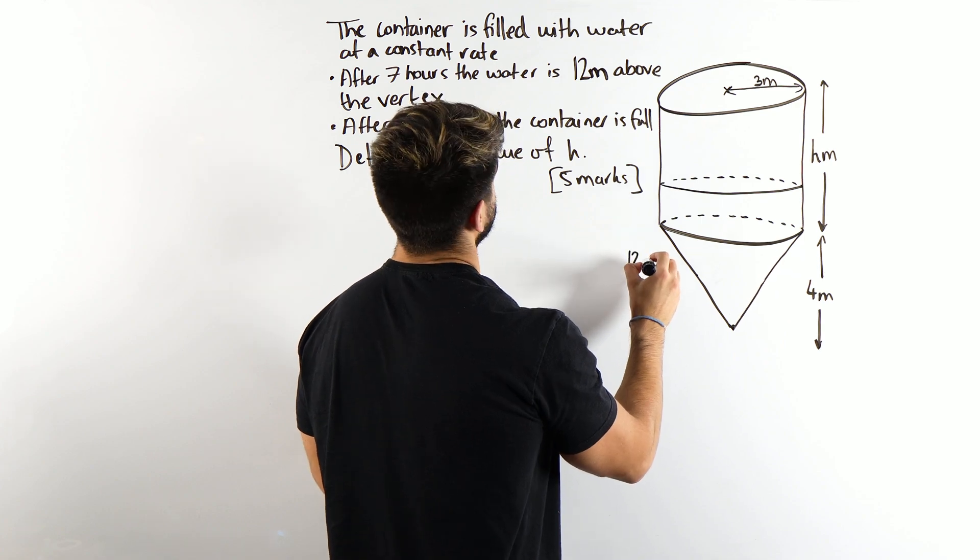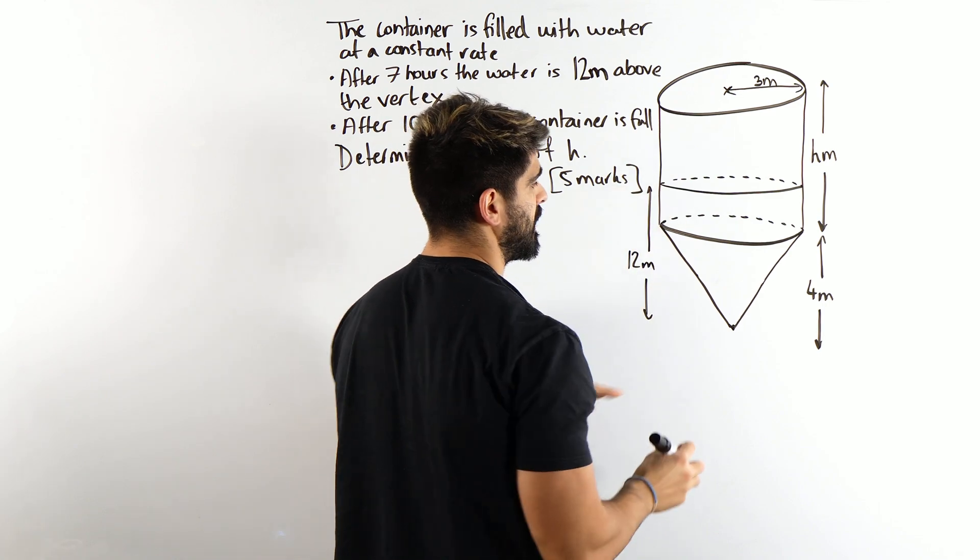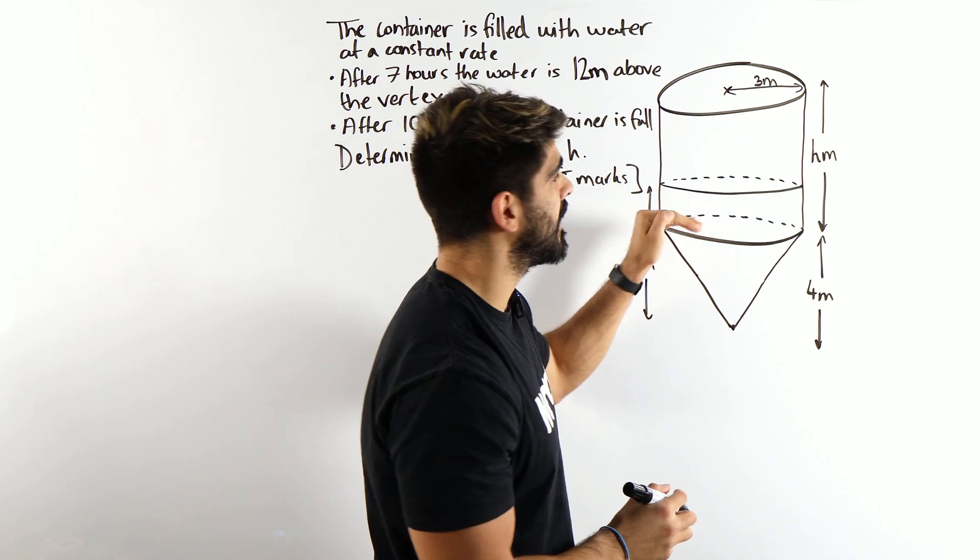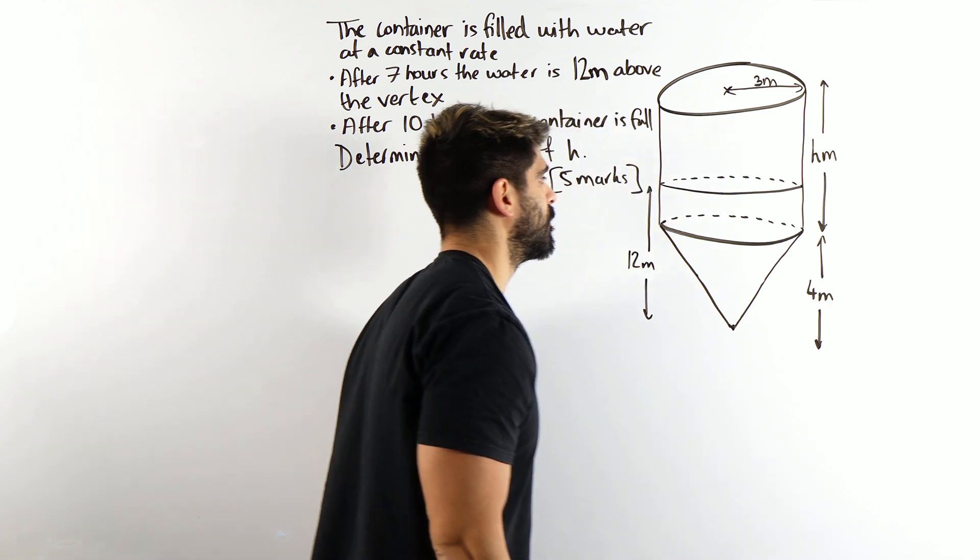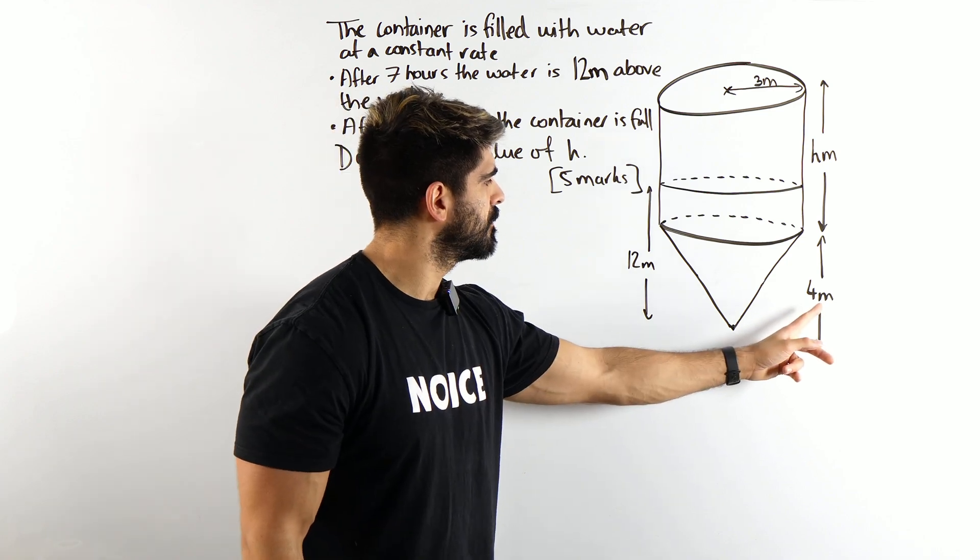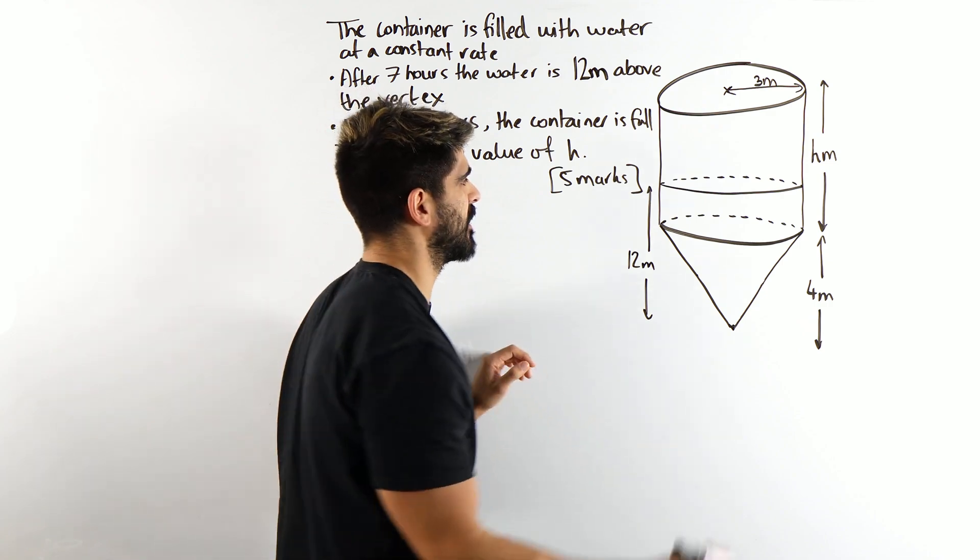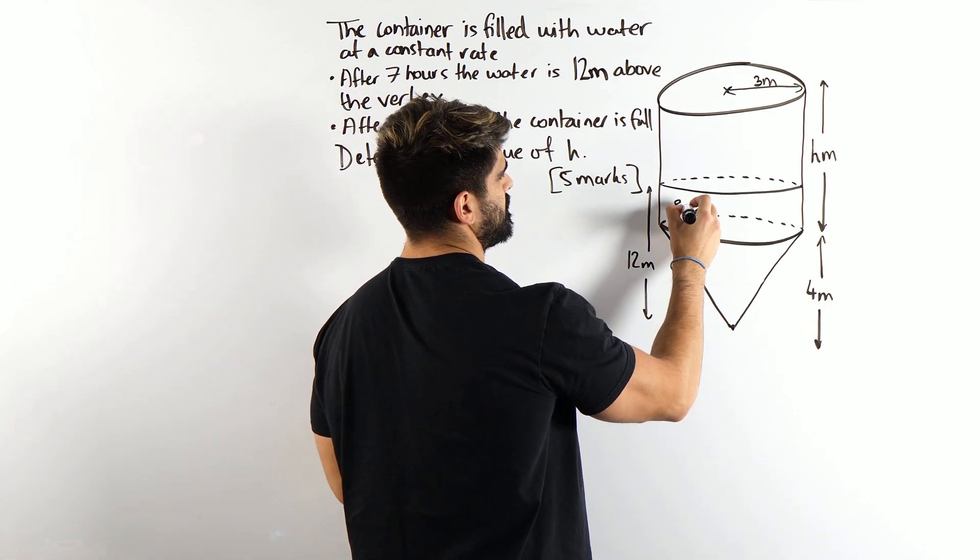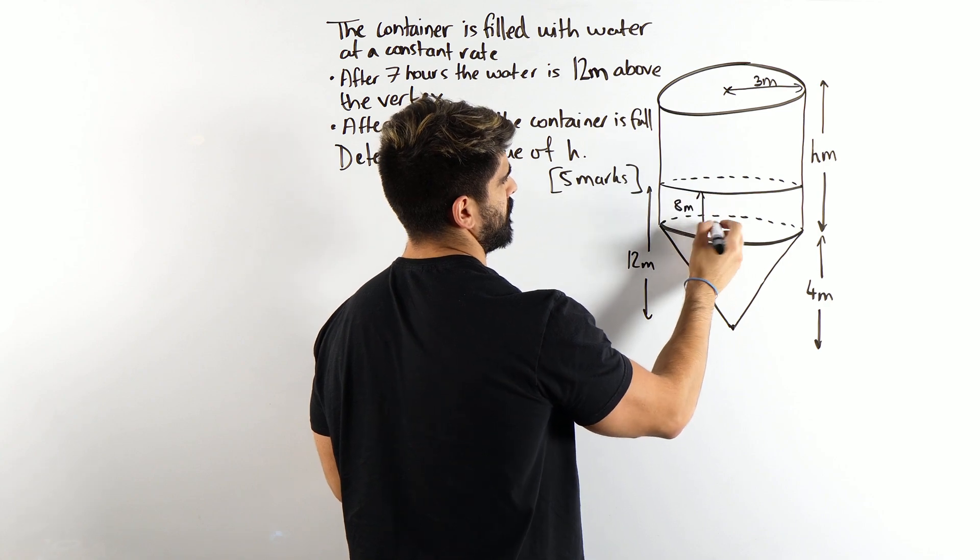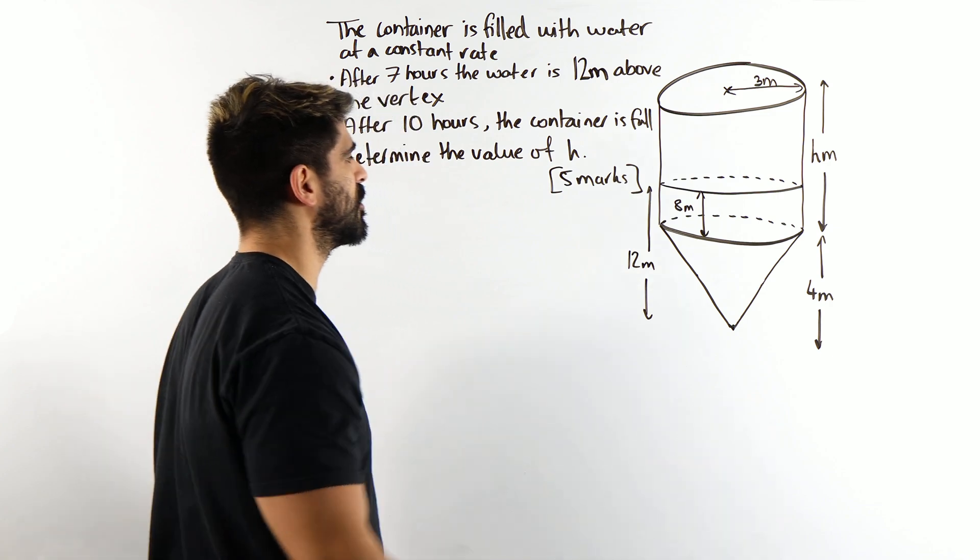So after seven hours, we are basically filling up the whole cone and part of that cylinder. But how much of it? Well, if that's 12 and that's four, the difference between them is eight. Obviously, it's not to scale. So this is going to be eight meters, which obviously does not look anything in length compared to that four.